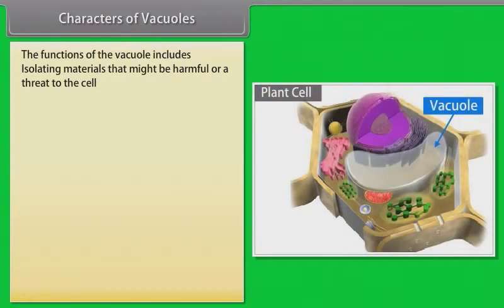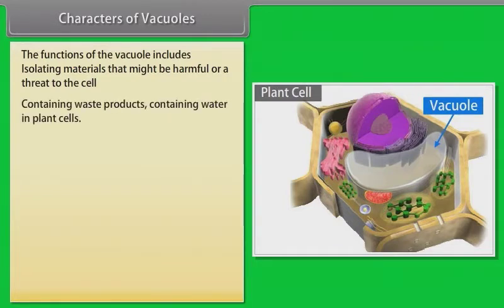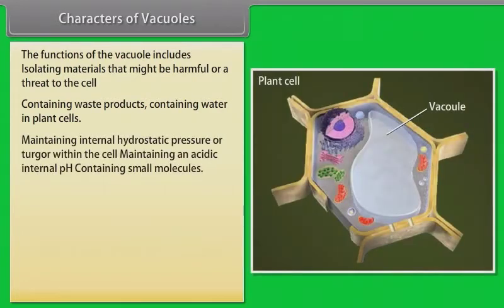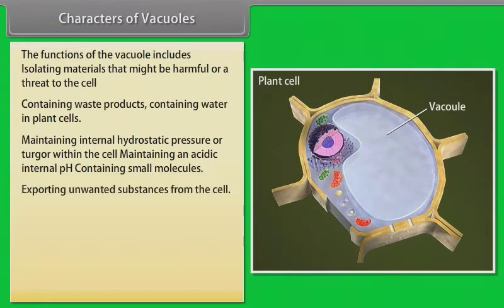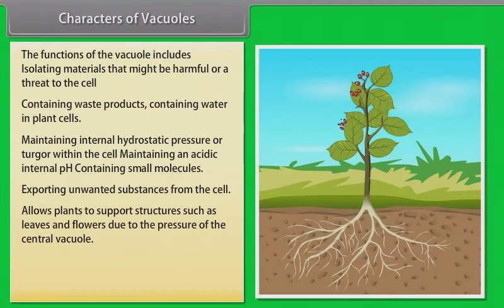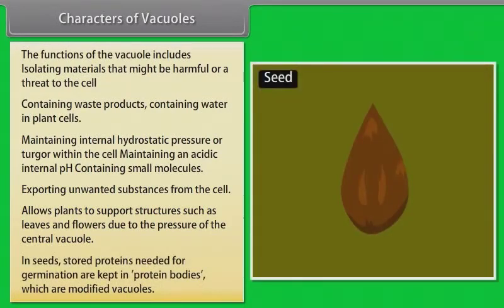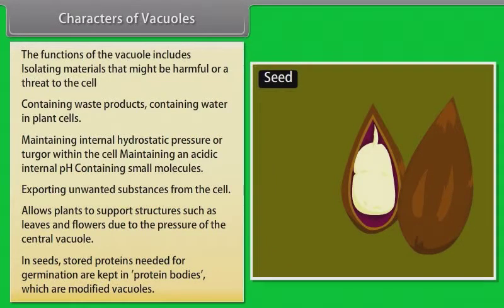The functions of the vacuole include isolating materials that might be harmful or a threat to the cell, containing waste products, containing water in plant cells, maintaining internal hydrostatic pressure or turgor within the cell, maintaining an acidic internal pH, containing small molecules, and exporting unwanted substances from the cell. Vacuoles also allow plants to support structures such as leaves and flowers due to the pressure of the central vacuole. In seeds, stored proteins needed for germination are kept in protein bodies, which are modified vacuoles.